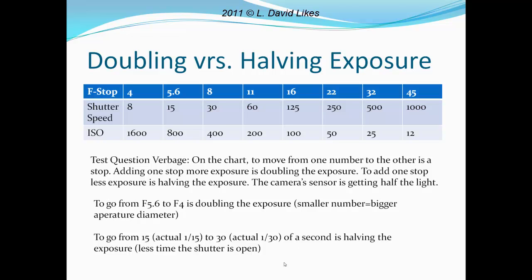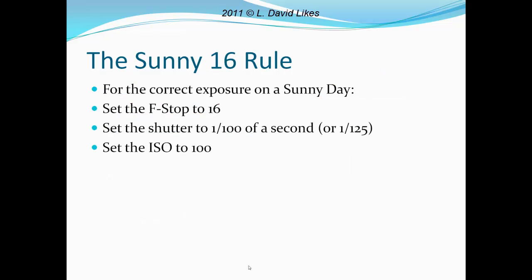And for the shutter speed, to go from 1/15th to 1/30th of a second, you're halving the exposure — it's less time the shutter is open. Now, the Sunny 16 rule: for correct exposure on a sunny day, you walk outside with your camera on manual and want a good exposure. Just set your f-stop to f/16, set your shutter speed to 1/100th or 1/125th of a second, and set the ISO to 100.